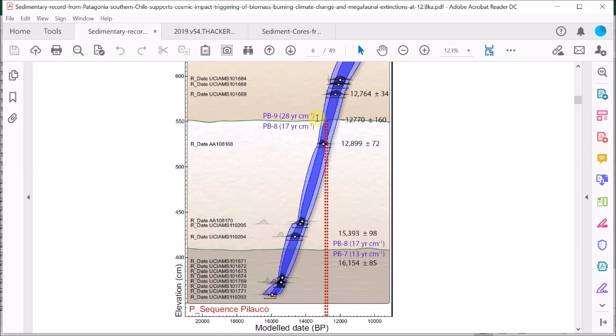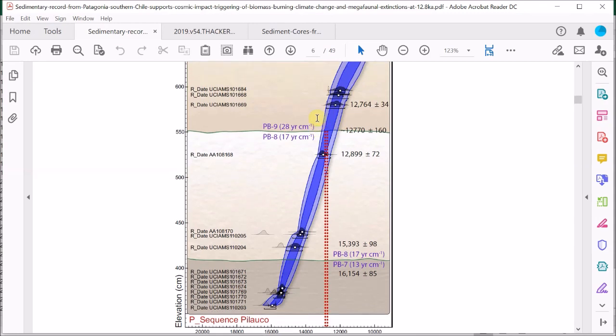And it's nice to see this data drawn this way. It makes it easy to see that the PB8-PB9 boundary is perfectly consistent with the estimated age of the Younger Dryas event given by these vertical dashed red lines.